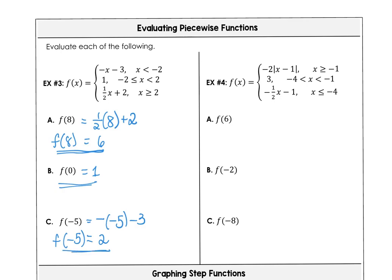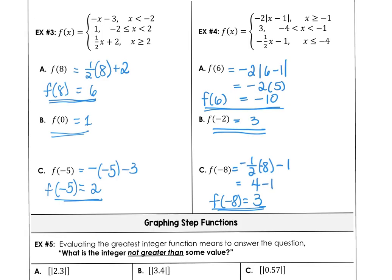For part a, I got negative 10. For part b, positive three. And for part c, I also have positive three.